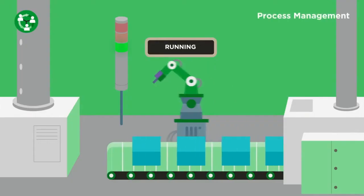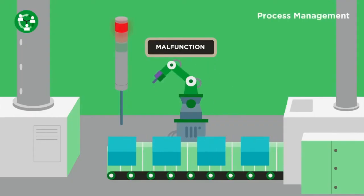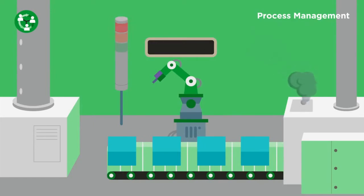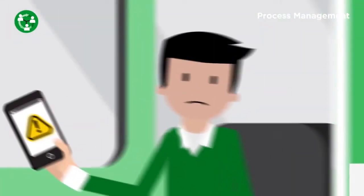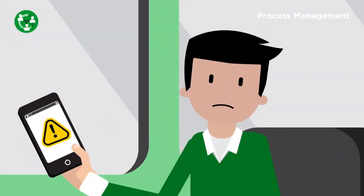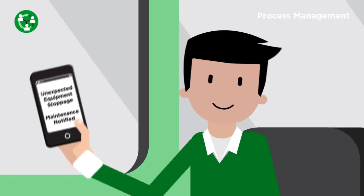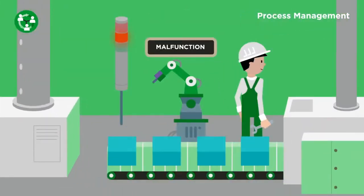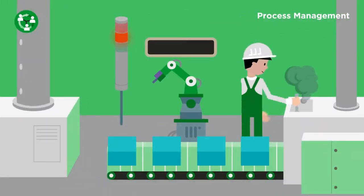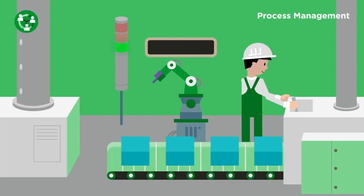Industrial Process Management enables the digitizing of manual and automated workflows that include people, equipment, and systems to automatically trigger mobile device notifications and other actions based on system statuses.